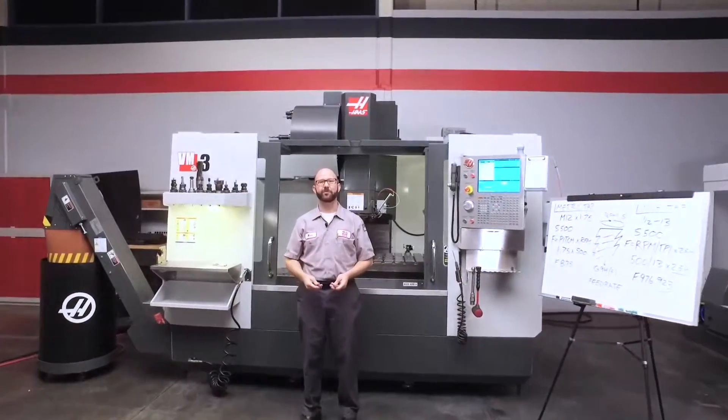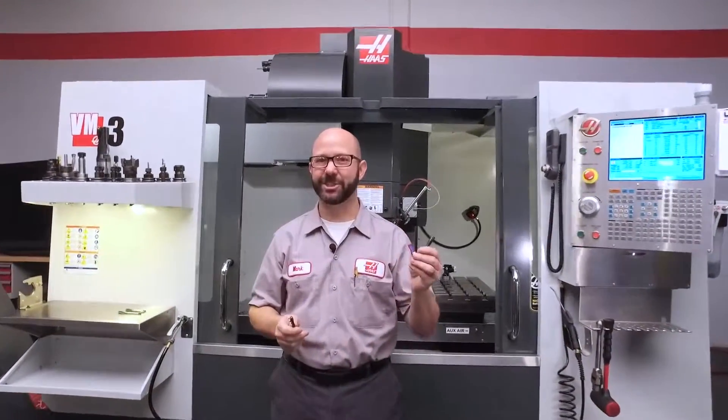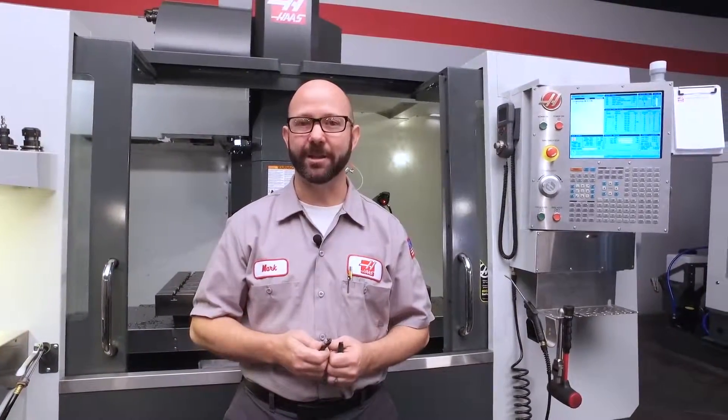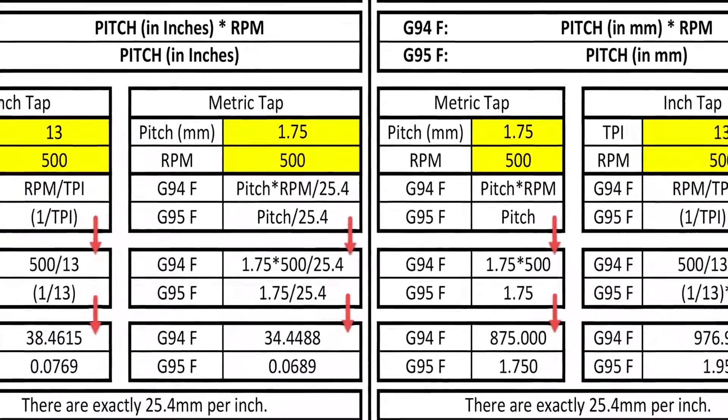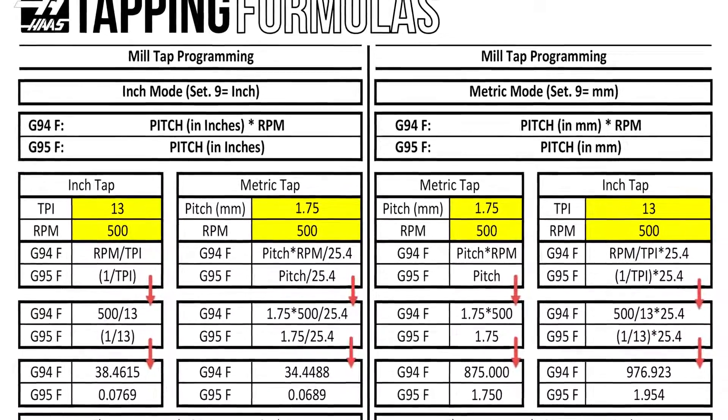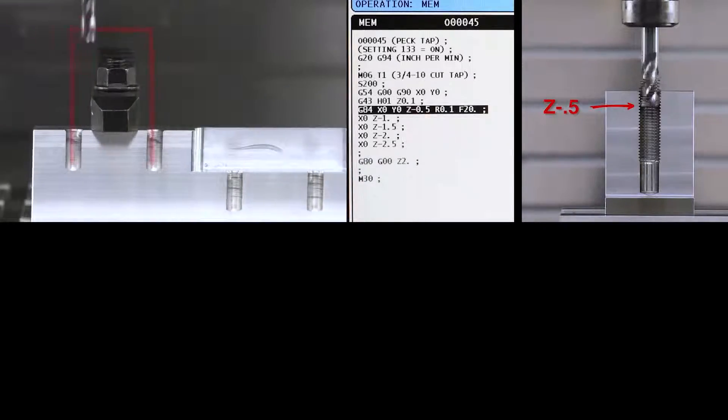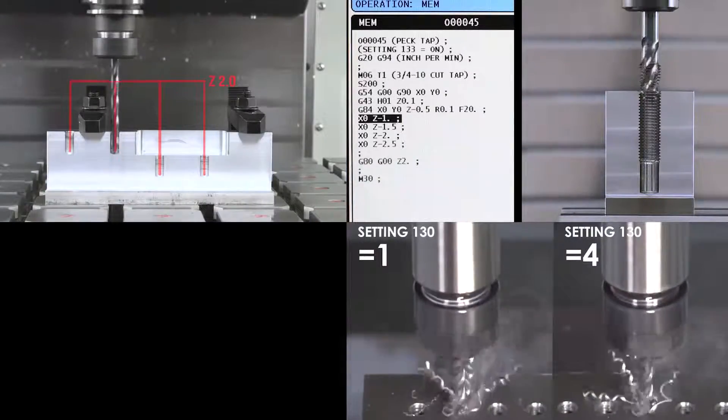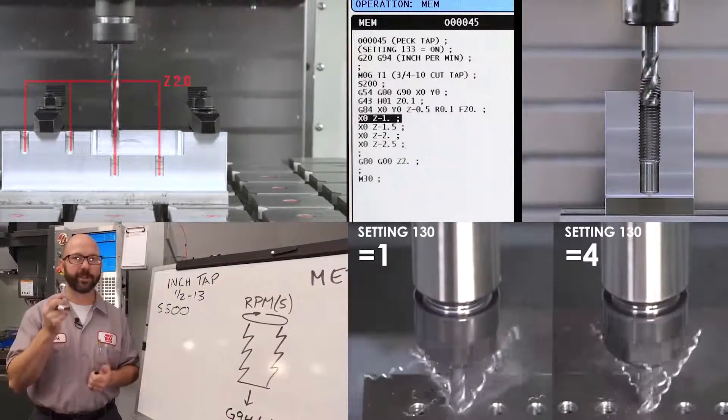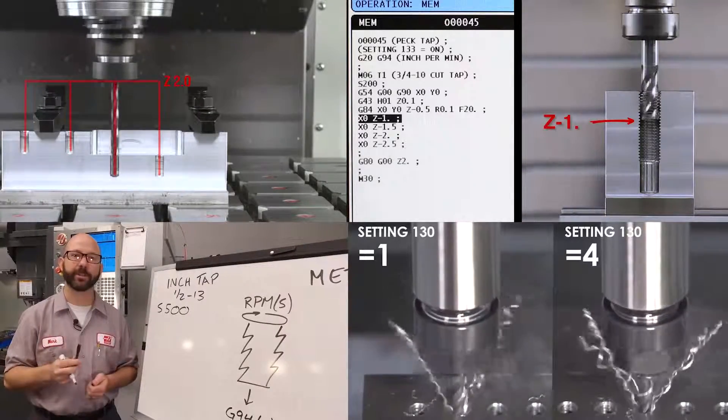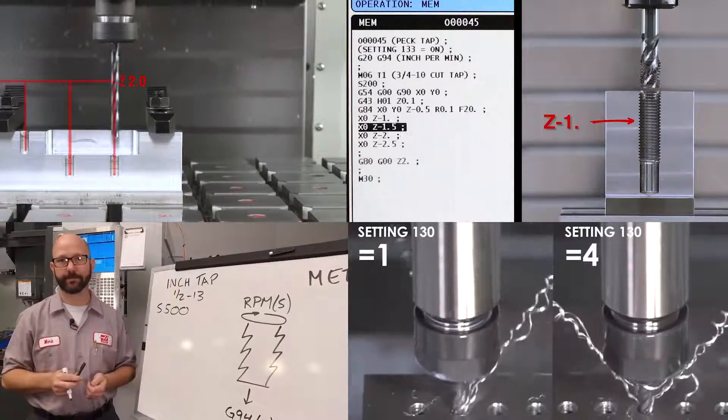Well we've done it. We've programmed both a metric and an inch tap using our G84 tapping cycle. Now be sure to click on today's bonus content. We've created a tapping document that covers all the formulas we use today as well as G95 feed per revolution tapping. We've also included links to videos that cover clearance planes, pec tapping, tapping faster with setting 130 and tapping in inch mode. Be sure to subscribe to these videos so you don't miss any of these tips as they're made.